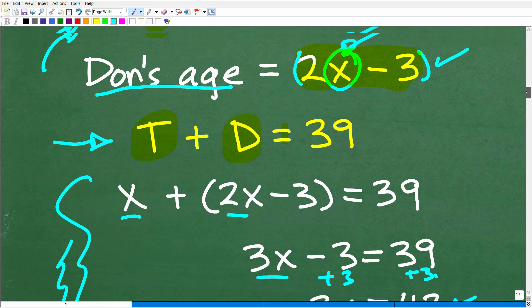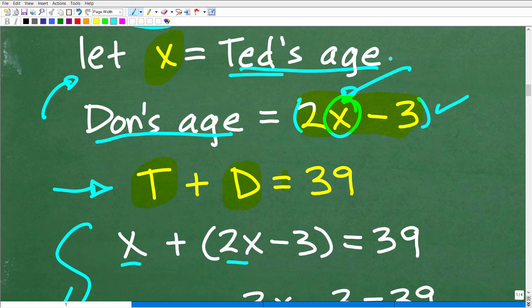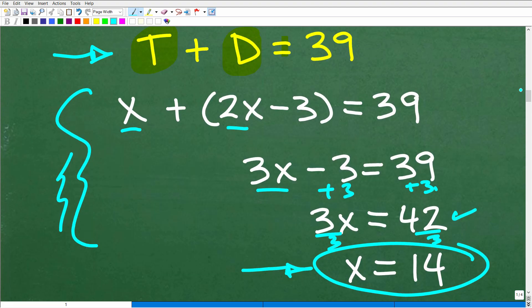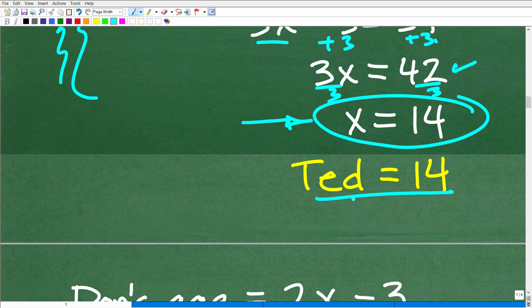And what does that mean? Well, remember, we established up here that X was Ted's age. So Ted's, and we should be more precise, Ted's age in years, right? So X is equal to 14 or Ted is actually 14 years old.